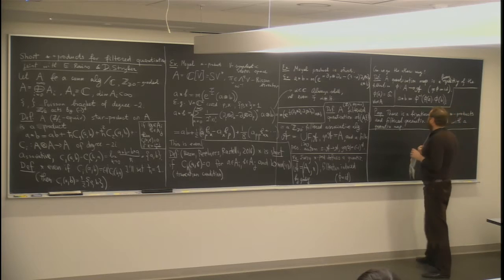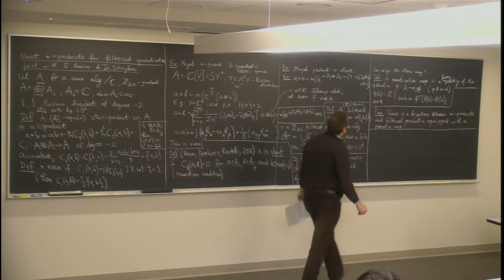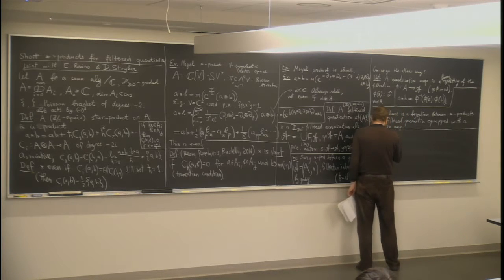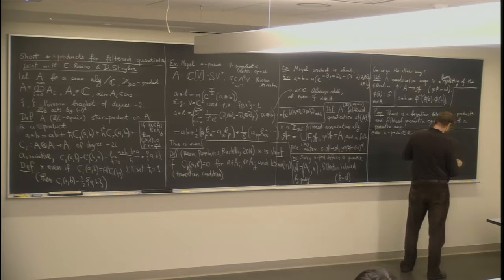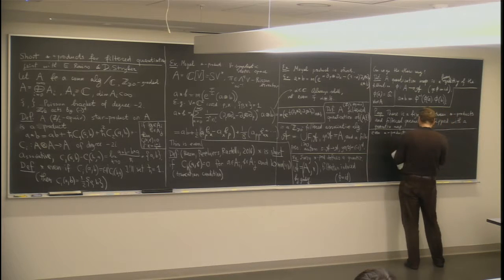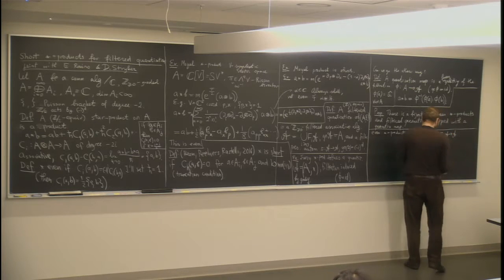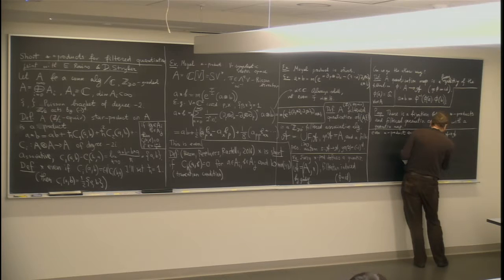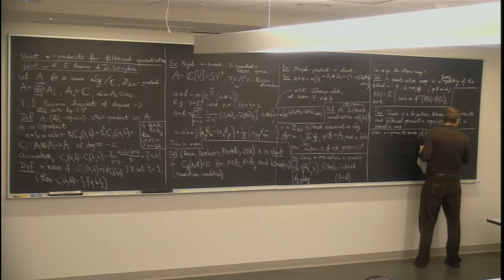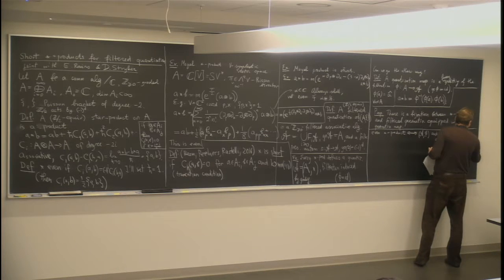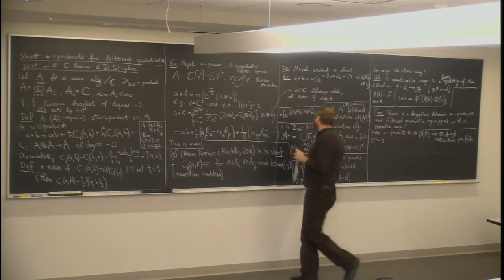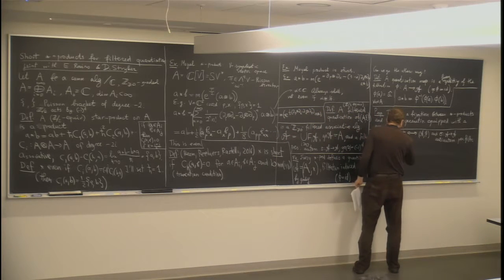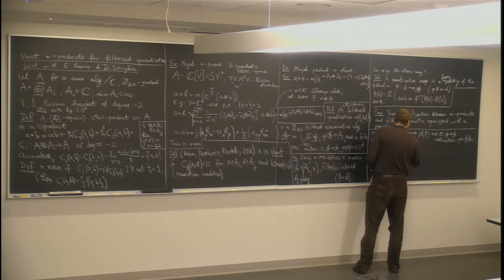There is a natural bijection between star products and filtered quantizations equipped with a quantization map. Regarding the evenness condition: even star products correspond to having an anti-automorphism σ from script-A to script-A, which preserves the filtration, such that its square is the automorphism S defining the Z-mod-two action, and the associated graded of σ equals the square root of minus one.